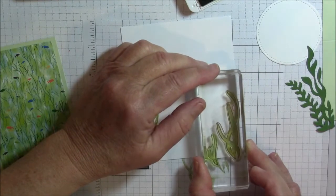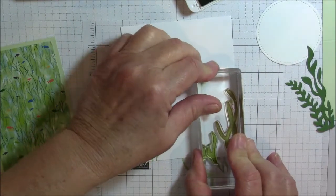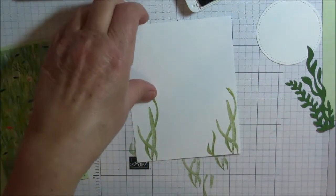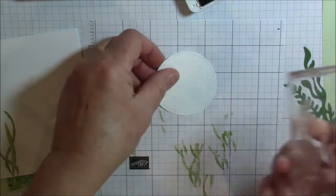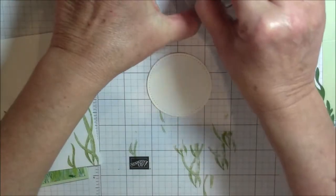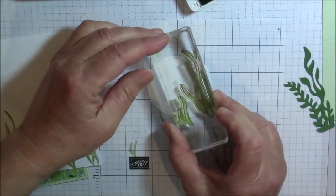Then we are going to be able to see this edge so I am going to stamp some over there also. Then onto our circle, while we have this stamp out we are going to stamp some of this grass here also.